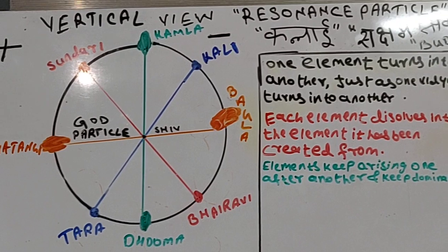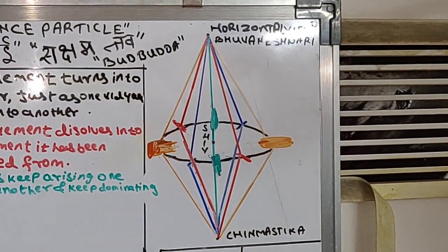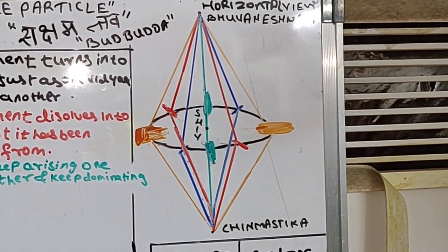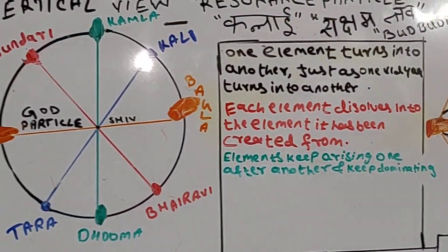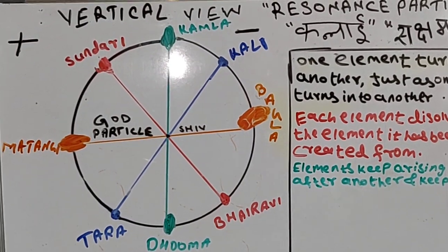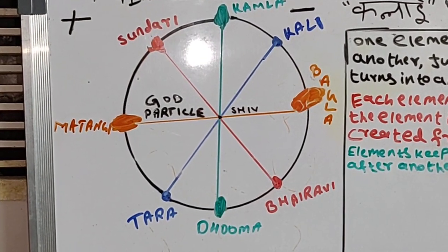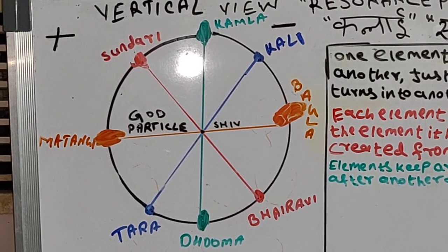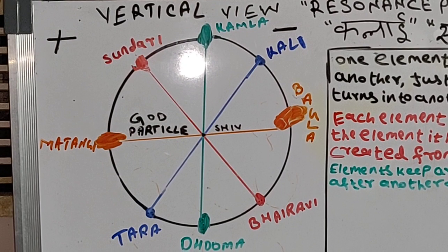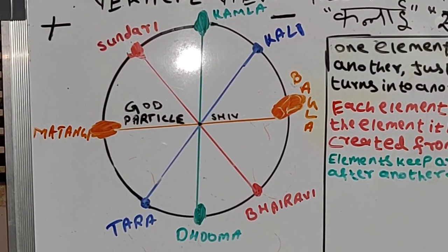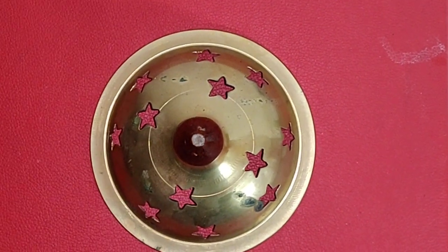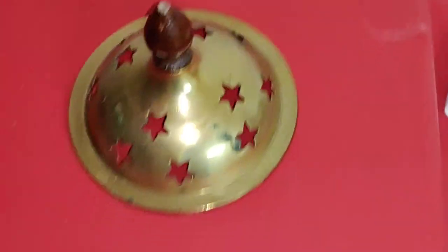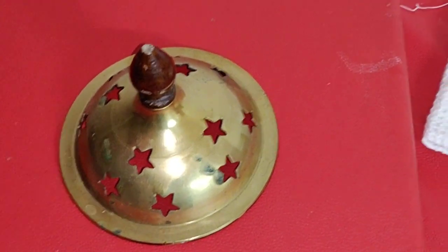This is the vertical view of the resonance particle, and this is the horizontal view of the resonance particle. This is a detailed video for many courses, so we have to give details relevant to each course. What is connected with your course, you can take that; the rest you can leave.